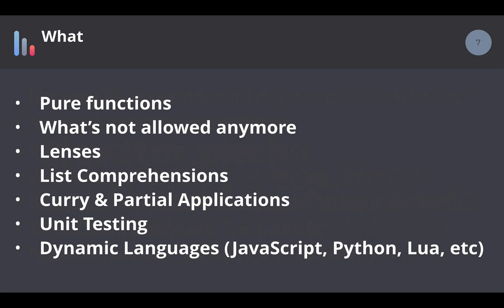What we're going to cover today: pure functions and what's not allowed after you learn those. Lenses, which are really only applicable to dynamic languages like JavaScript, Python, Lua, Ruby. A lot of typed functional programming languages don't need lenses. List comprehensions or array comprehensions. I'm going to touch a lot on currying and partial applications. A little bit about unit testing spread around — the key takeaway being no mocks. And it's all applicable to dynamic languages that you could use today.